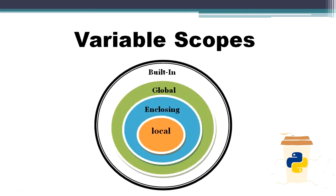Now let's discuss the scopes one by one. What's a local scope? When a variable is created inside a function, it is only available within the scope of that function and ceases to exist if used outside the function. Thus the variable belongs to the local scope of that function.